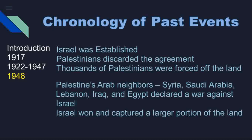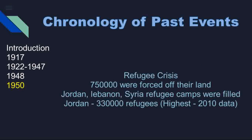Syria, Saudi Arabia, Lebanon, Iraq, and Egypt — these Arab countries aligned with Palestine and declared war against Israel. In the war, Israel captured a large portion of land, including parts of the Gaza Strip and northern areas. In 1950, a refugee crisis emerged in the region as 750,000 Palestinians were forced off their land.